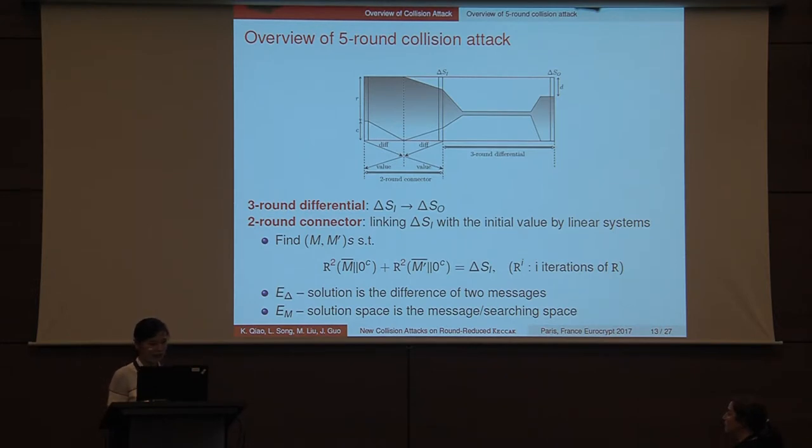Once a high probability differential delta SI to delta SO is found, we build two equation systems, E-delta and E-M to find the message pairs such that after padding and the two round iterations of round permutation, the difference of the messages is exactly the target difference delta SI. The equation system E-delta is built on differences. It is well determined and its unique solution is the message space in which we will search for collisions in the last three rounds. So the key point is how to build the equation systems E-delta and E-M.